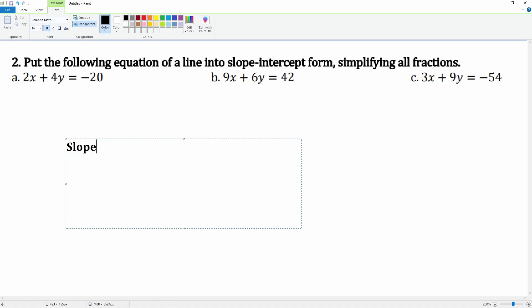Slope-intercept form is y equals mx plus b. It has a slope and it has a y-intercept.